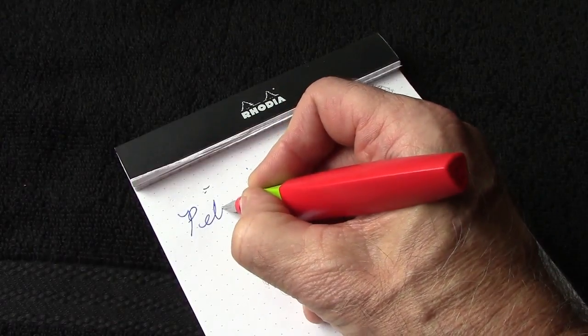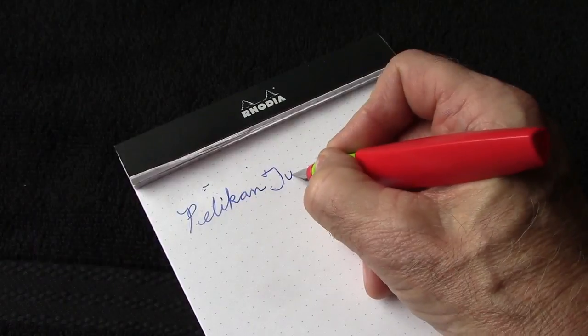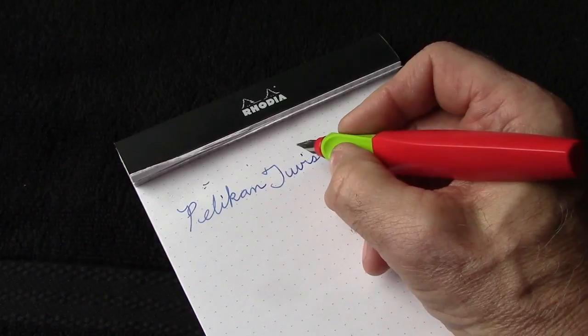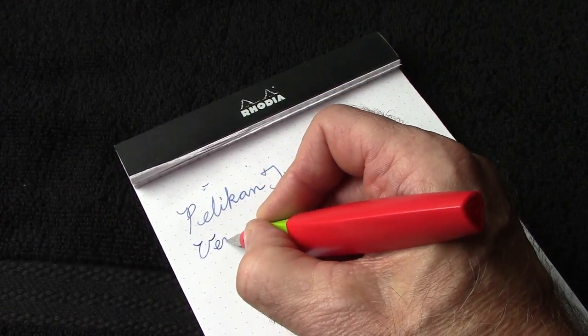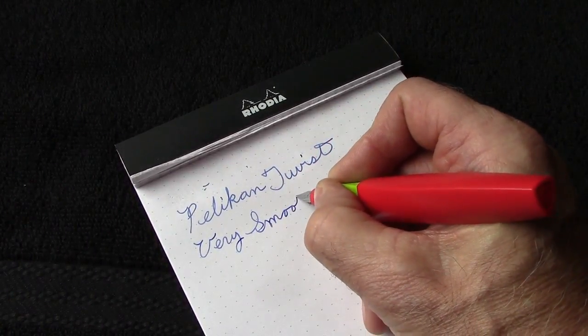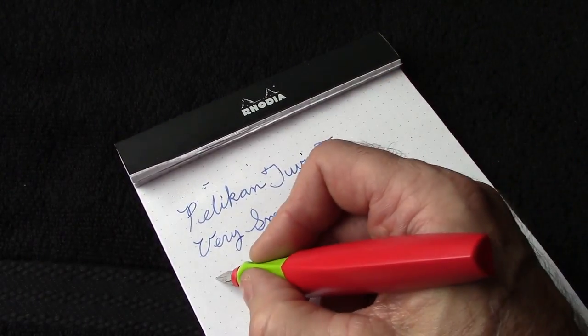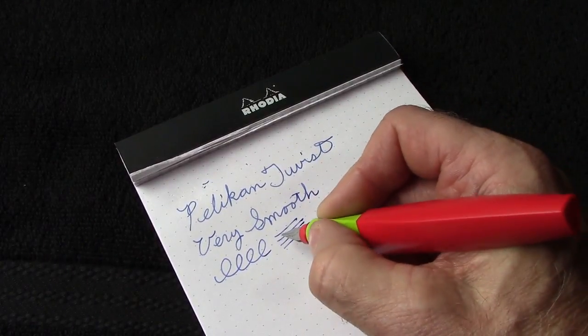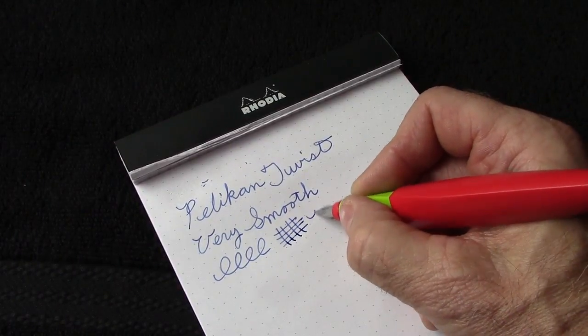So this is a Pelican Twist. The first comment is, this is a Rodia Dot Pad, is very smooth. And I'm using my childlike writing script. It's a standard steel nib. It's not going to have any real line variation. I don't expect any. But, it does write well.